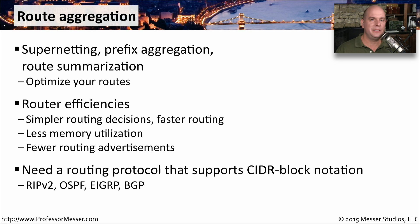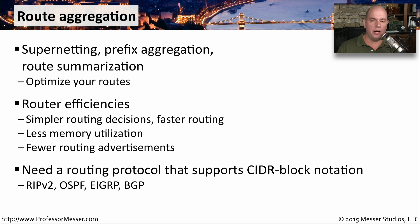To take advantage of this route summarization, we're going to want to either statically route or use a routing protocol that understands CIDR block notation. Examples of these might be RIP version 2, OSPF, EIGRP, or BGP.